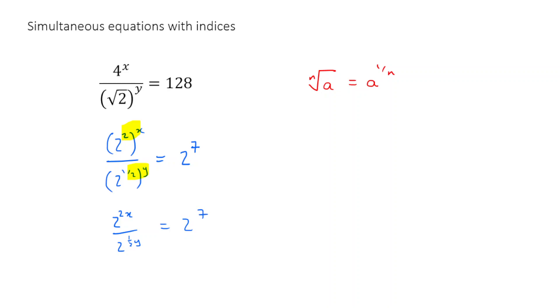And now we can use the division rule because if we've got a to the power of m divided by a to the power of n, then that is equal to a to the power of m minus n. So here we have 2 to the power of 2x minus a half y is equal to 2 to the power of 7. I've just subtracted the powers. And again, if this is true, then these two powers here must also be equal. Because if the left-hand side and right-hand side are equal and they share the same base, then the powers must be equal. So we end up with 2x minus a half y is equal to 7.